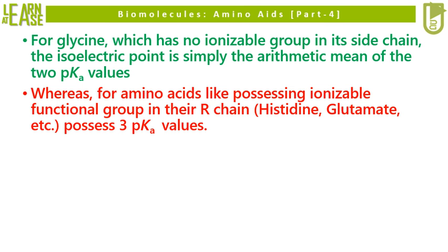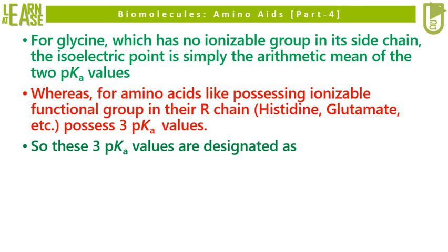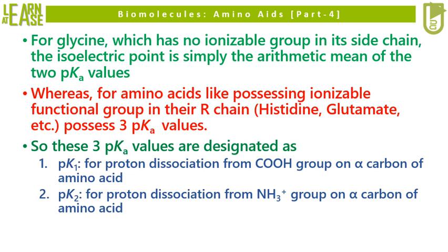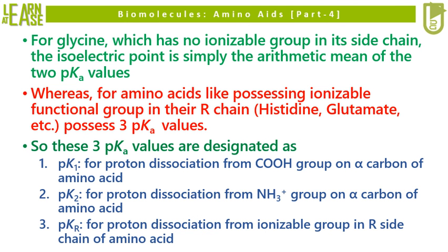For amino acids possessing an ionizable functional group in their R chain — for example histidine, glutamate, etc. — there are three pKa values. These three pKa values are designated as: pK1, for proton dissociation from the COOH group on the alpha carbon; pK2, for proton dissociation from the NH3+ group on the alpha carbon; and pKr, for proton dissociation from the ionizable group in the R side chain of the amino acid.